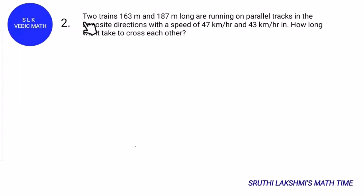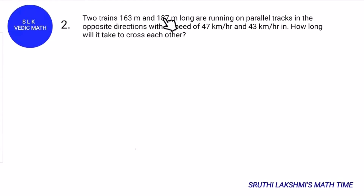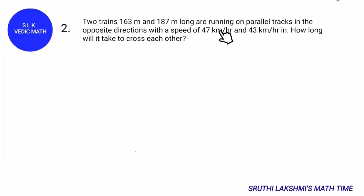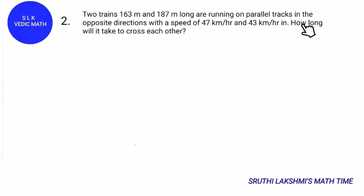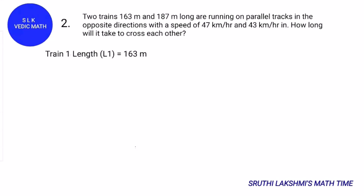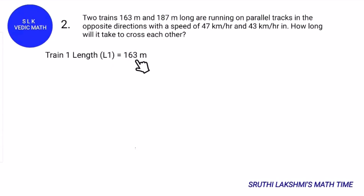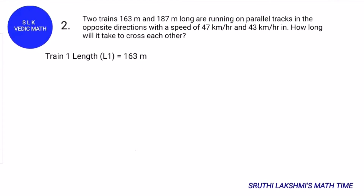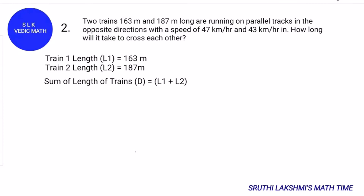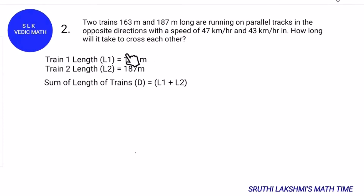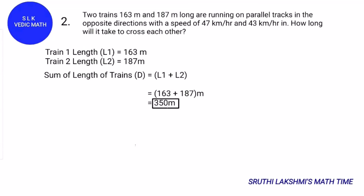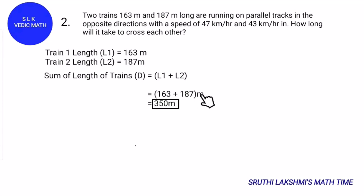Let's see one more example. Problem two: Two trains 163m and 187m long are running on parallel tracks in opposite directions with speeds of 47 km/h and 43 km/h. How long will it take to cross each other? The first train's length L1 is 163m and the second train's length is 187m. Adding L1 plus L2: 163 plus 187 equals 350m.